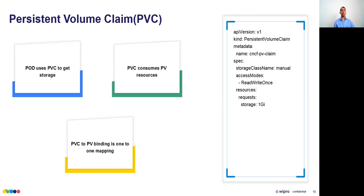A Persistent Volume Claim (PVC) is the way Kubernetes uses storage. If I created a PV of 50 GB, the PV is not directly visible to the pod. PV is consumed using PVC — when a pod needs storage, it has to reference the PVC.